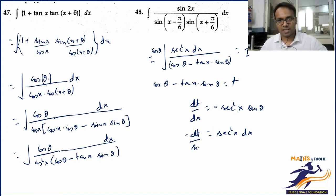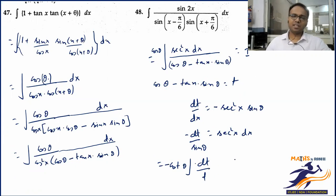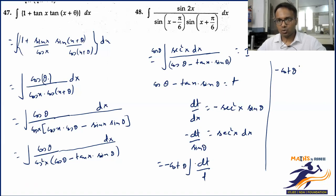Yeh sec²x into dx ko main kaise replace karne ja raha hoon? dt se replace karne ja raha hoon. Right hand side pe sec²x into dx ki jagah par main kya rakhna chahunga? Minus dt over sin θ. I am going to put this here in the expression of I and hopefully things would be sorted out.